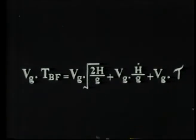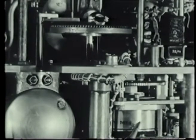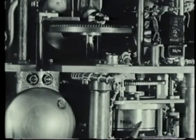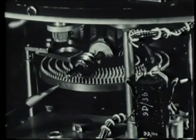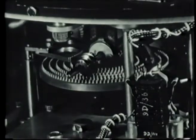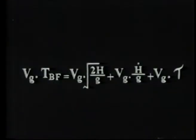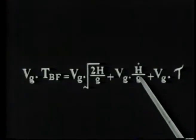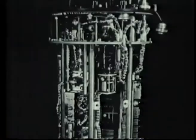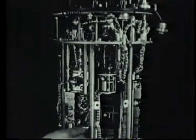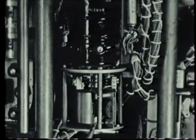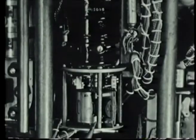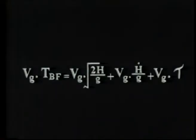The first term is proportional to the square root of height. A potentiometer fed with ground speed voltage Vg is turned by a square rooting pinwheel which is driven by the height servo shaft. The second term is proportional to the rate of change of height and is obtained from a capacity commutator or bucket machine fed by Vg and driven by the height servo shaft. Division by the gravity term G is achieved by suitable scaling.